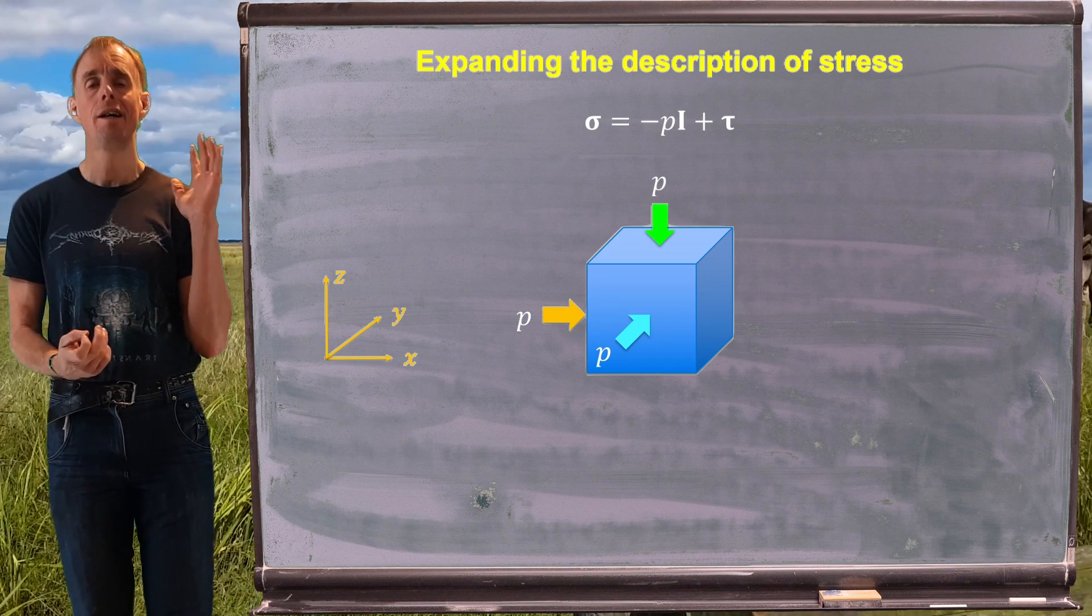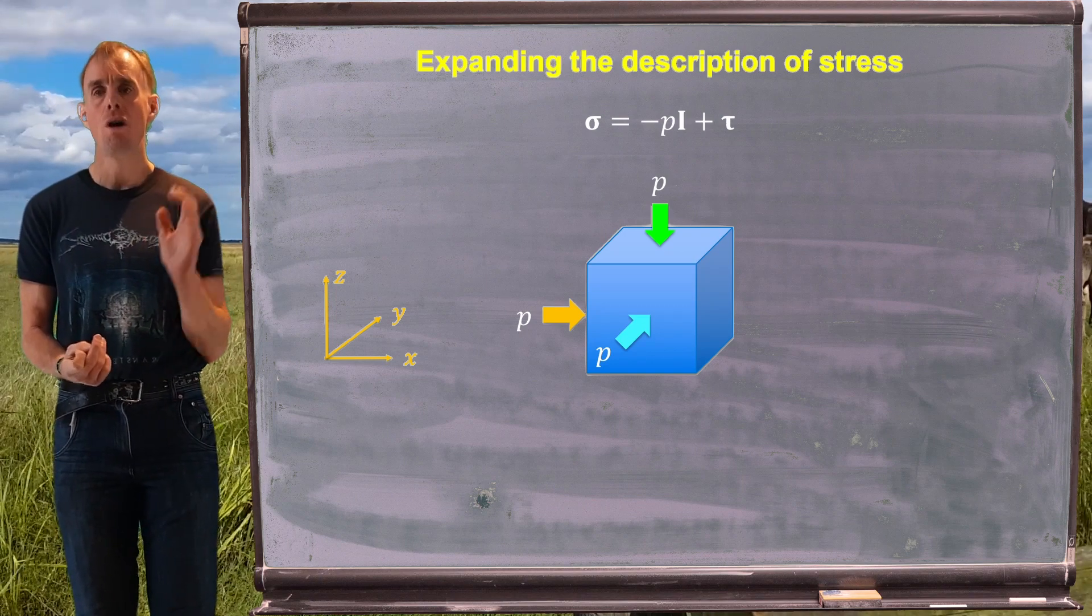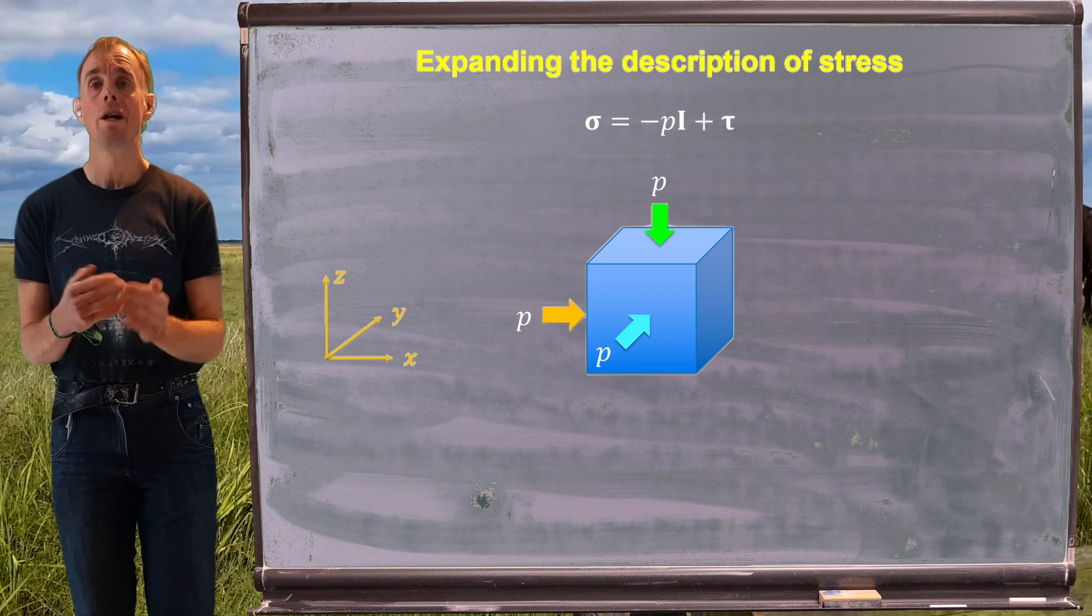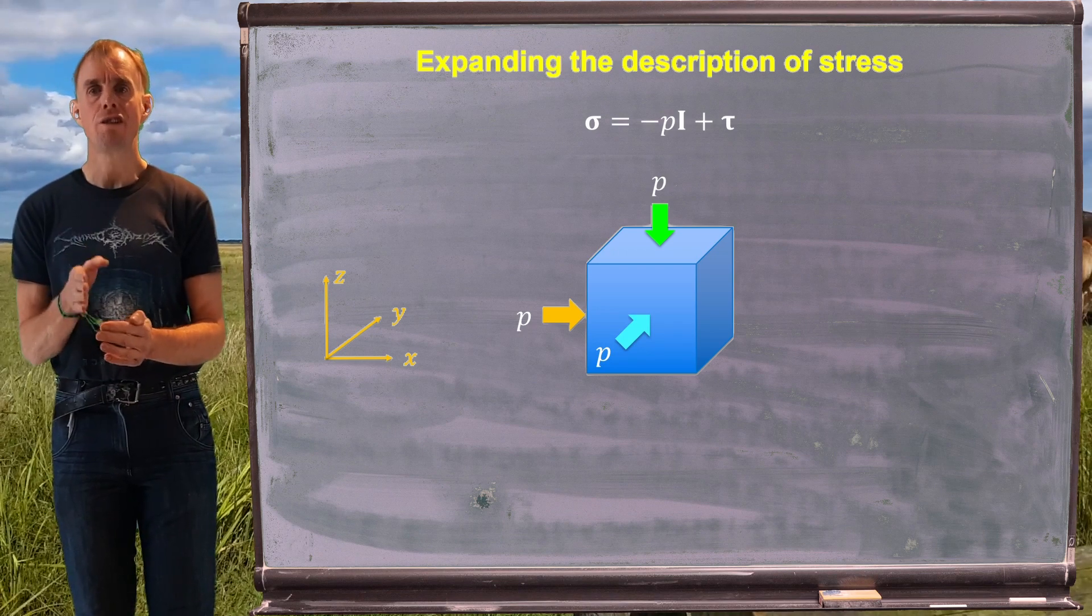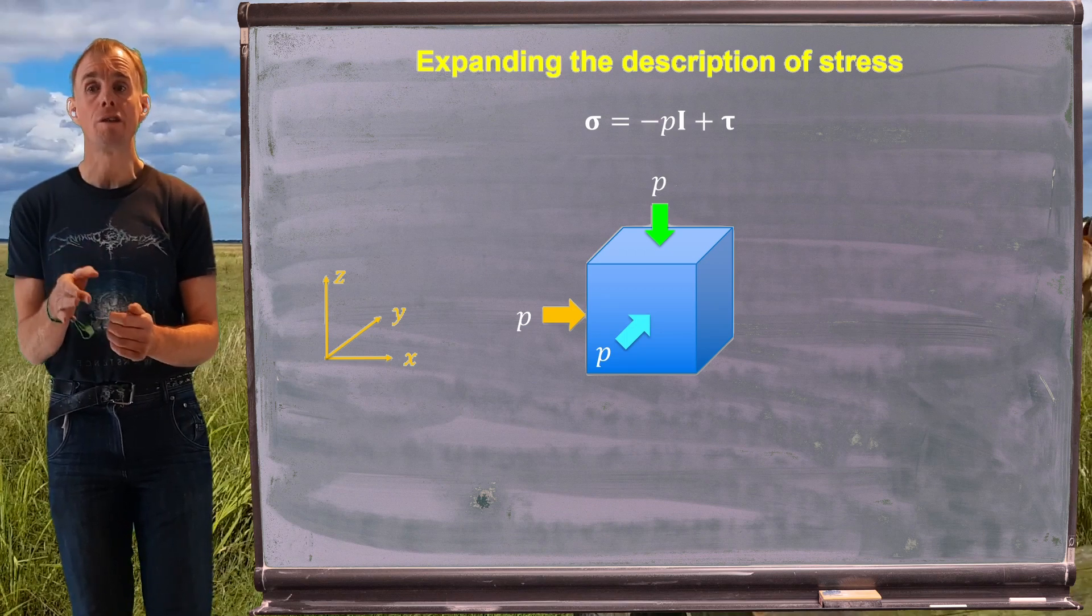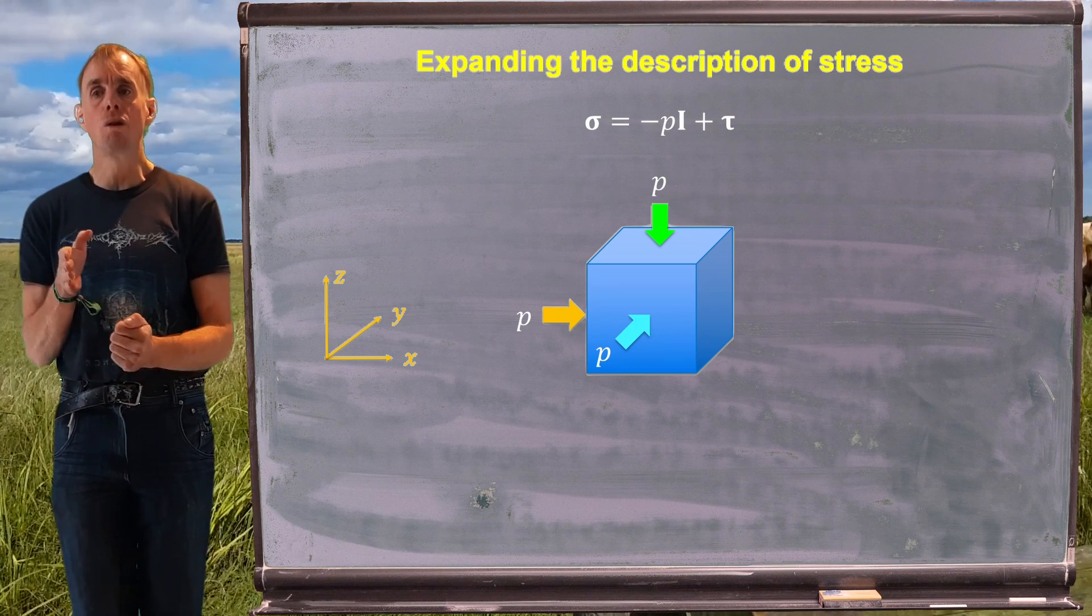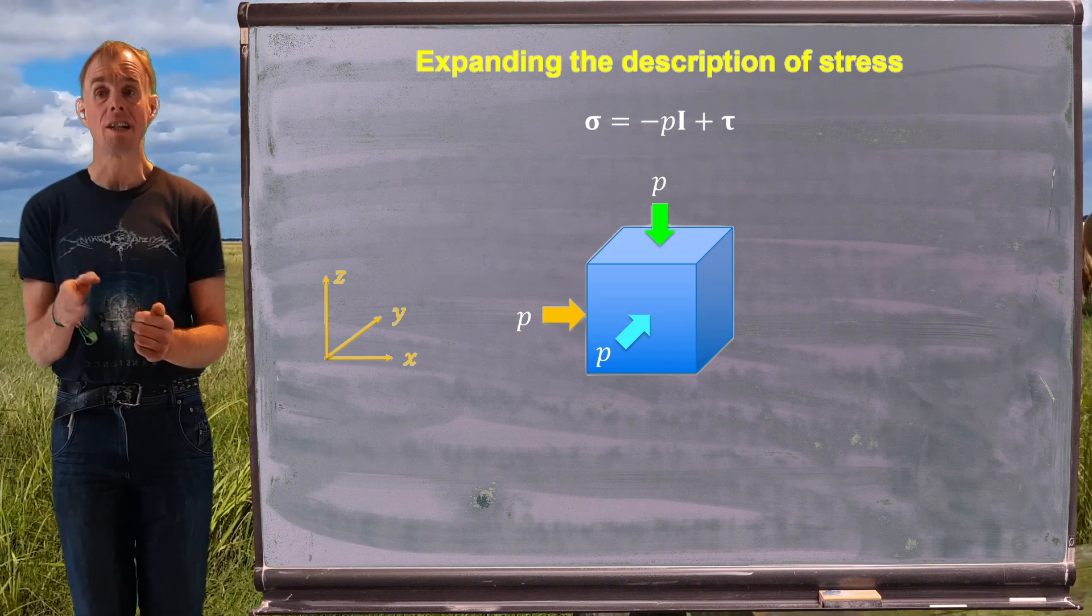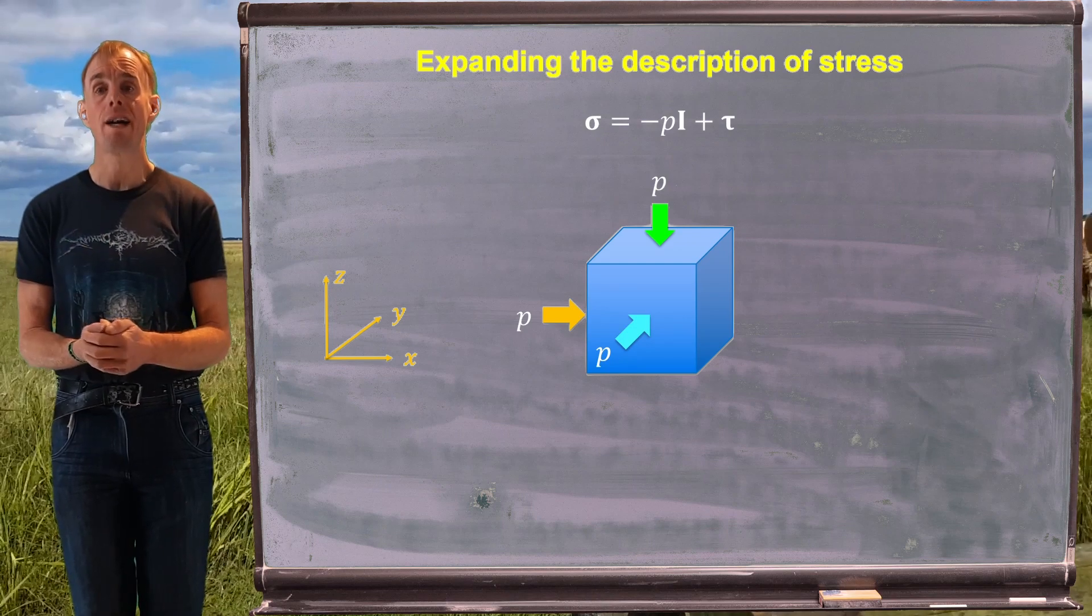Now, if we think about which direction and which face those pressures are acting upon, we can say that they're acting in the principal directions, aren't they? They're acting normal to each of those three faces. Not only are they acting normal to each of those faces, they're acting in the direction that the face is oriented as well. So for example, if we look at the blue arrow, that is a pressure applying on the y direction face. That pressure is also applied in the y direction. Same for the green arrow for the z face and the orange arrow on the x face.